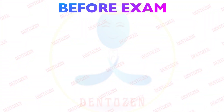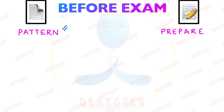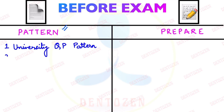Let's start with before exam. The most important thing is you must know the pattern of your university question paper, because the pattern may be different for different universities. You must know the pattern for your university so that you can do your preparation according to that pattern. First, you must know the university question paper pattern for that subject. Then you must know what the maximum marks are and what marks you require to pass the exam.